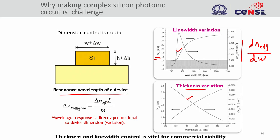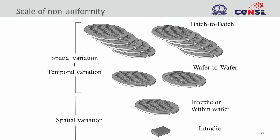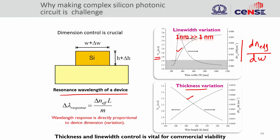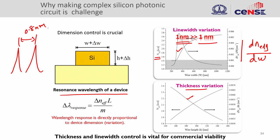It is important to ensure that thickness and line width are under control. Without that, you cannot fabricate reproducible devices compatible with large-volume fabrication. One nanometer variation in waveguide width will create more than one nanometer shift in device response. In communications, 0.8 nm corresponds to 100 GHz channel spacing between two resonances. If the uncertainty is already 1 nm, it is simply impossible to fabricate these devices reliably.